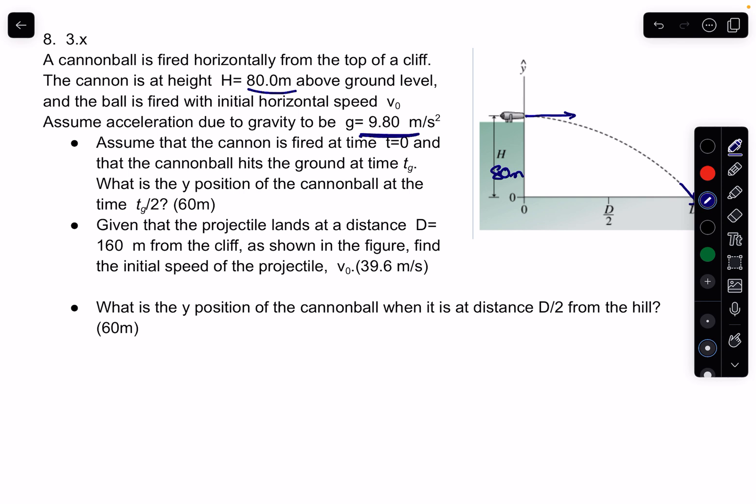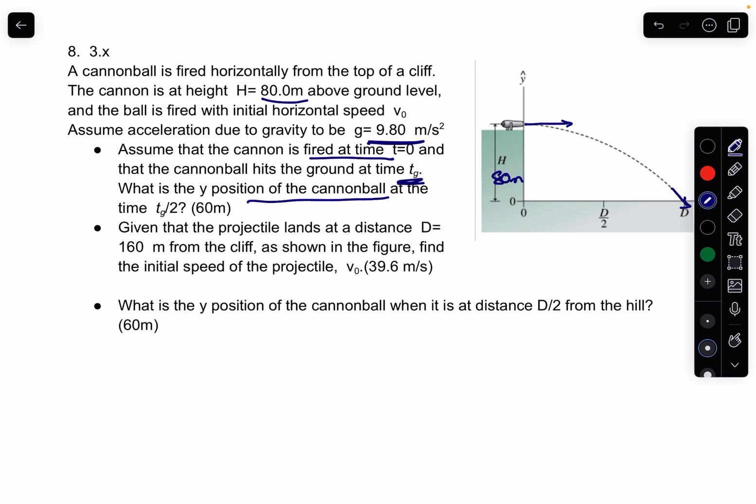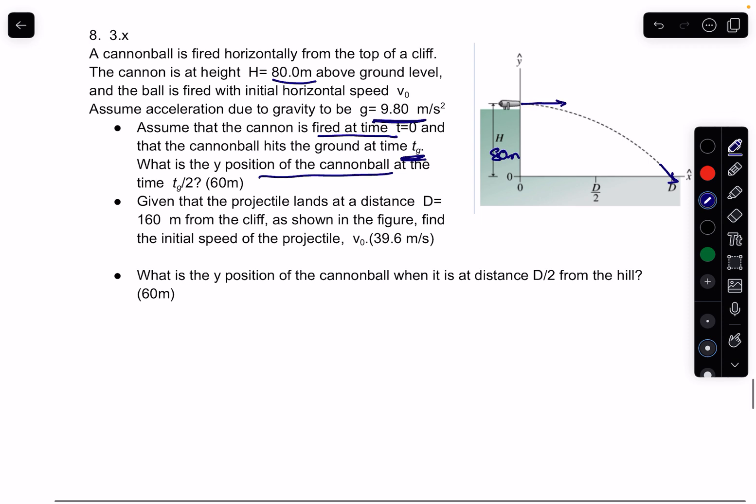We know acceleration of gravity, 9.8. Assume the cannon is fired at a time t equals 0, and the cannonball hits the ground at time tg. What is the position of y of the cannonball at time tg over 2?